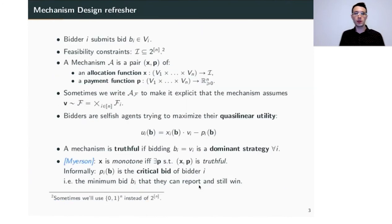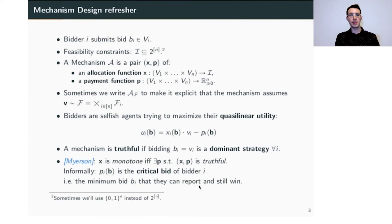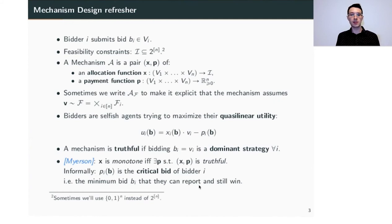Let me go through a quick mechanism design refresher. We assume a sealed-bid auction format where each bidder i submits a bid b_i. There is a set I of subsets of the bidders, called feasibility constraints, which tells us which subsets of bidders can be declared winners. A mechanism is a pair of two functions x and p, both taking as input the bids of all bidders. The allocation function x outputs a set of winners and the payment function outputs a vector of how much each bidder pays. Sometimes we will put a subscript on the mechanism to denote that it was designed under certain distributional assumptions.